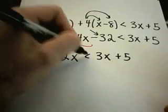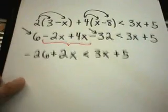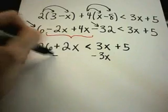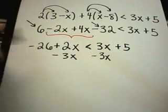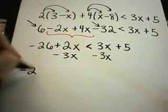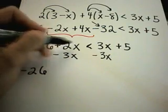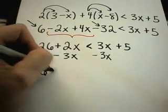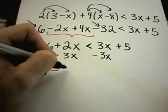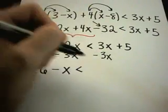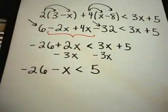I'm going to get my x's on the same side. Suppose I move them to the left by subtracting 3x. So the -26 is still on the left side. Positive 2x - 3x will give me -1, which we don't typically write, x. And that's going to be less than positive 5.